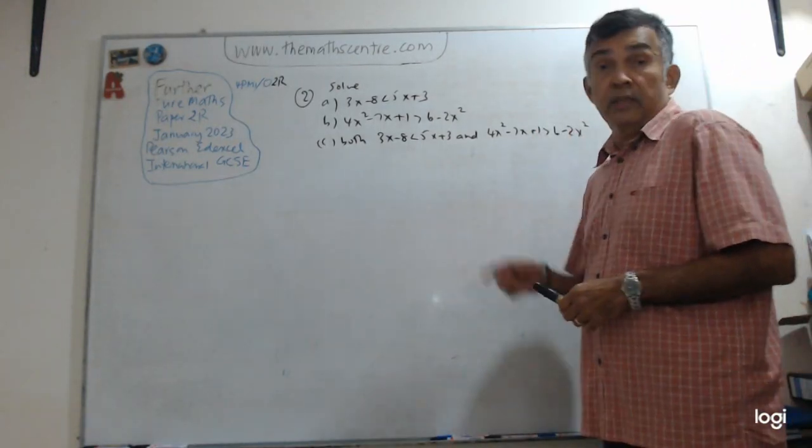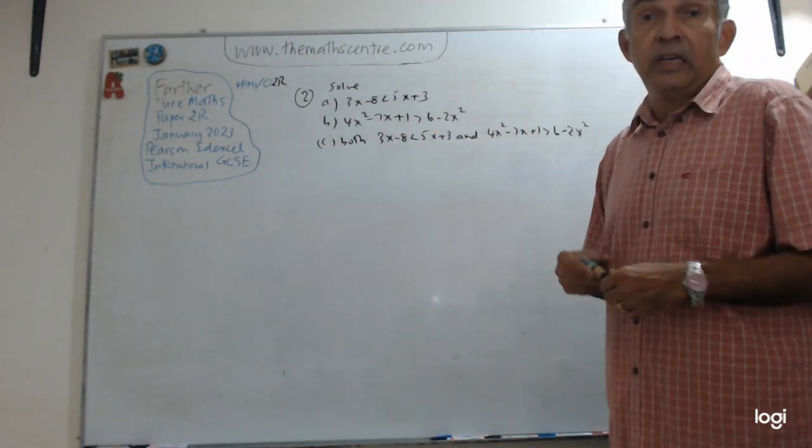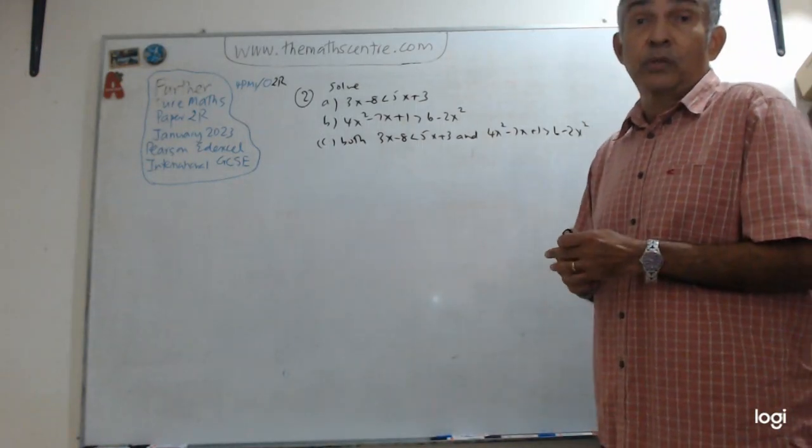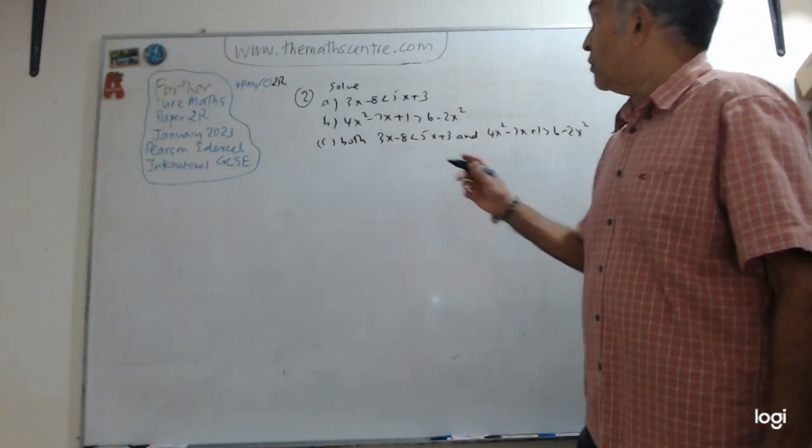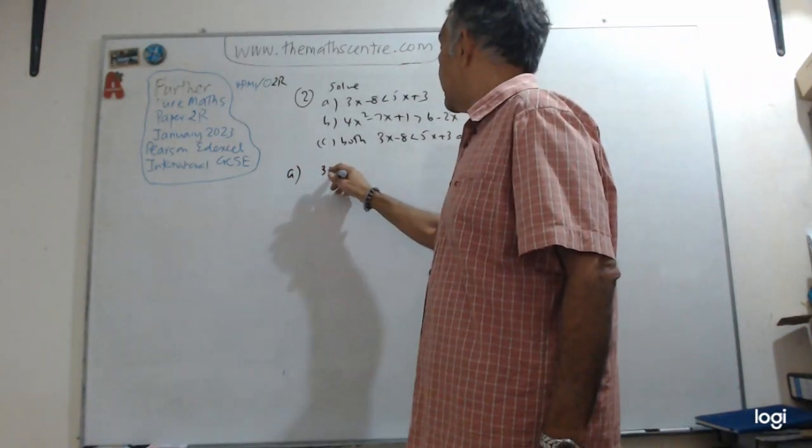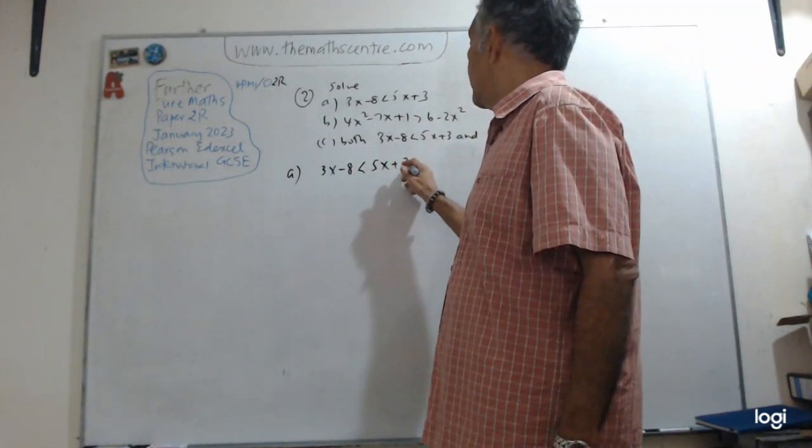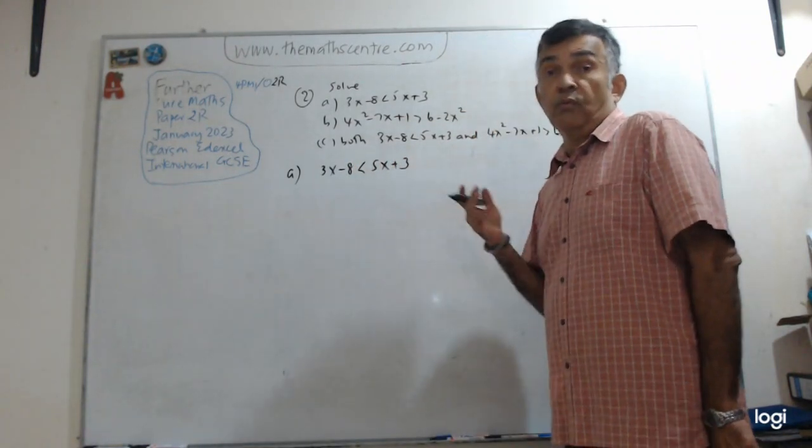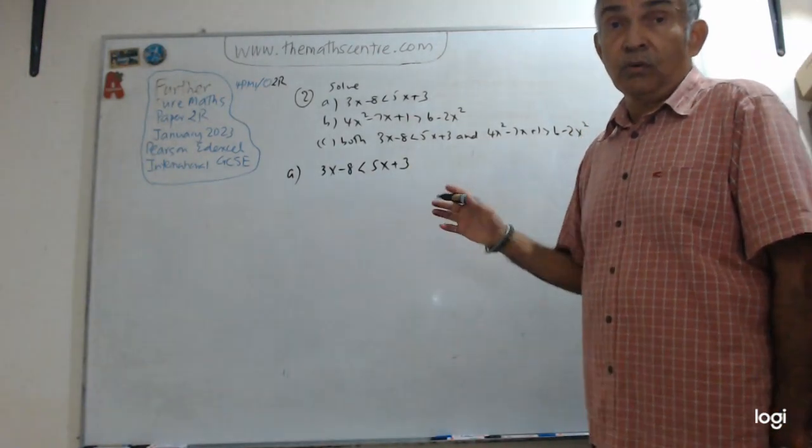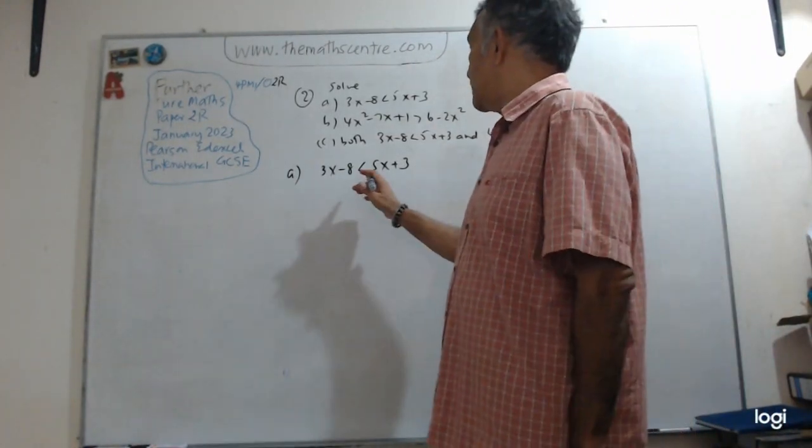This is question number 2 in this paper. I have just written the stuff that I need to solve the problem. The details you can look up in the actual question paper. 2A can't be easier than this: 3X minus 8 less than 5X plus 3. They ask you to find values of X that satisfy this inequality. Note, this is a linear inequality. Pretty easy for us. Let's see.